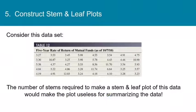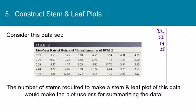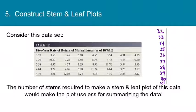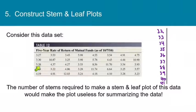If we made a stem and leaf plot with this data as-is, the leaves would only be the hundredths digits, and the stems would all be two or three digits. The number of required stems would make the plot useless — we would have to start with a stem of 32 and go all the way up to 120, with most lines having only one or two leaves and most lines having none at all. The stem and leaf plot in this case would actually do more harm than good. However, we could round the data to one decimal place: 3.27 becomes 3.3, and 5.38 becomes 5.4.